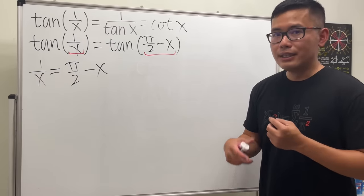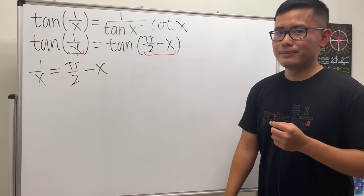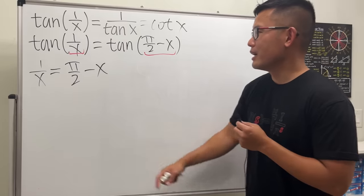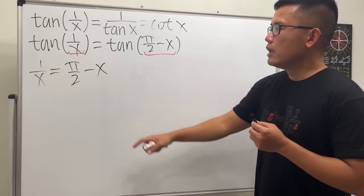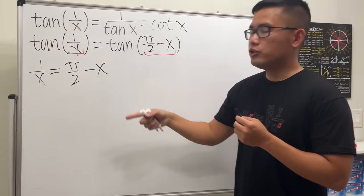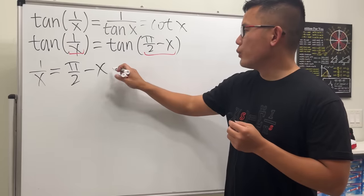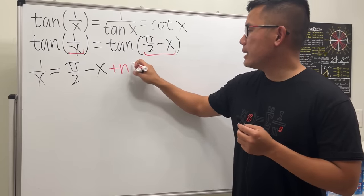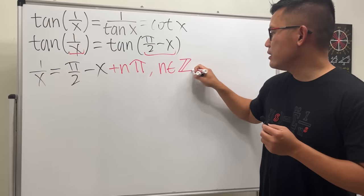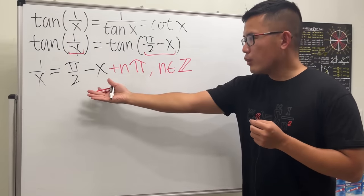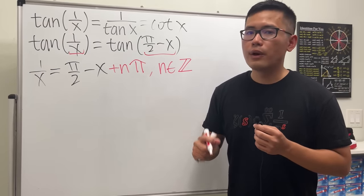But the truth is we have infinitely many answers for this equation. When we have tangent on both sides, we can set the arguments equal to each other, but because the period of tangent is π, we are going to add nπ. We'll denote that n is an integer. Now we can look at this equation and solve for x to get all the solutions.